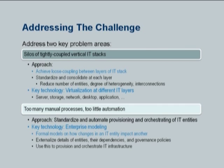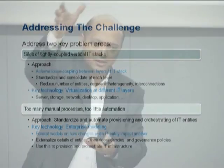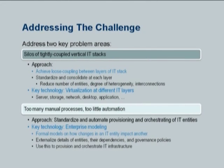Given these two basic problems — highly coupled vertically integrated silos, and too many manual processes — what can you do? The solution technique for the first problem is virtualization. What virtualization does is allow you to decouple these vertically integrated things, so you can change something underneath without affecting the higher layer. There are many levels at which you can virtualize — VMware and Xen do hardware platform virtualization using a hypervisor, and then further layers hide databases and so on.